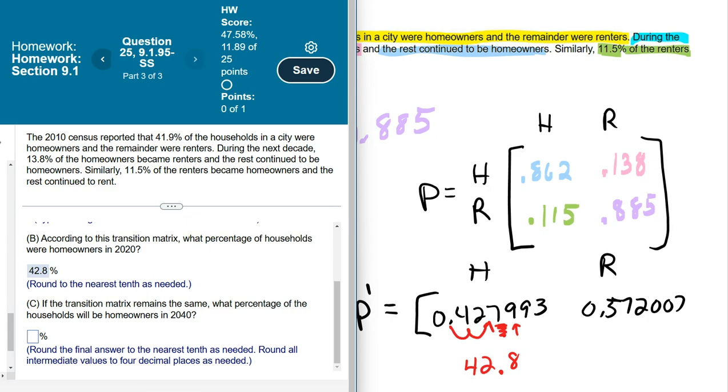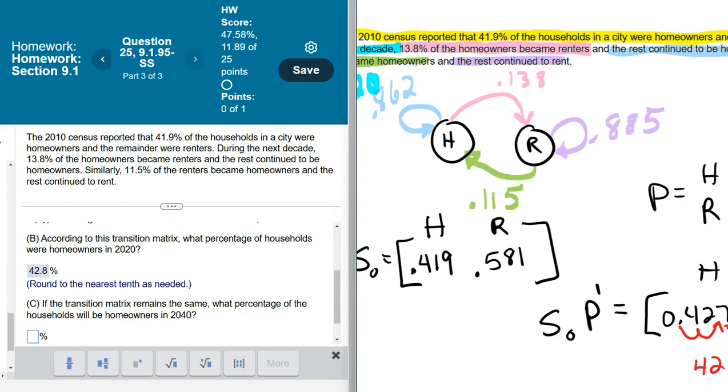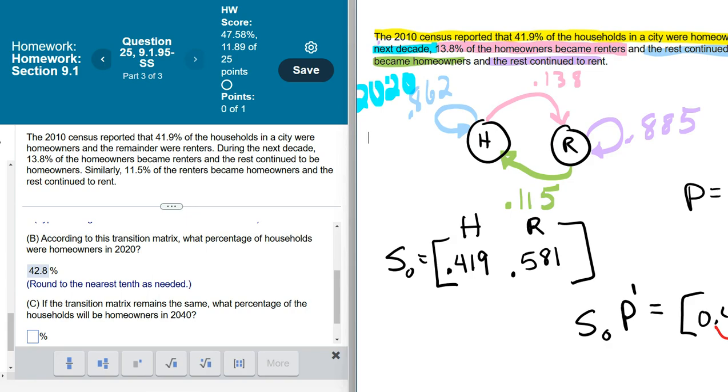A decade, I guess, is the time they're talking about. And then, if the transition, 2040. 2040 would be, so 2010, 2020 was one decade, 2030 is two decades, so 2040 would be three decades later. So, just grab your calculator again, and take my 1 by 2 times my 2 by 2, but raise it to the third power.